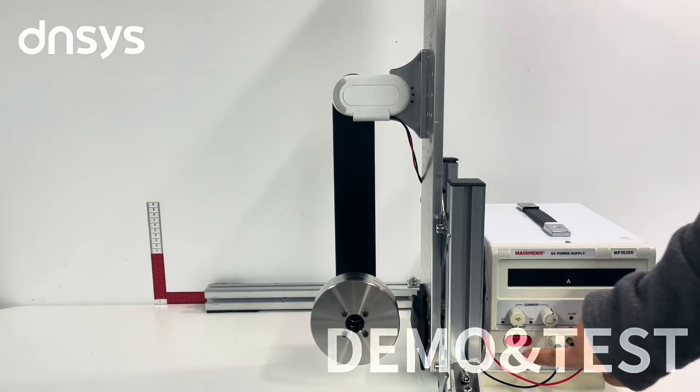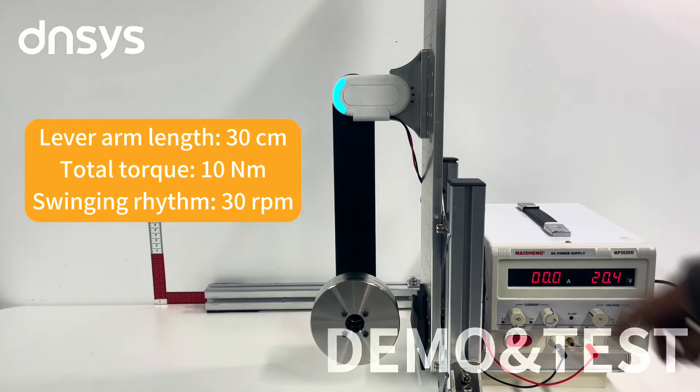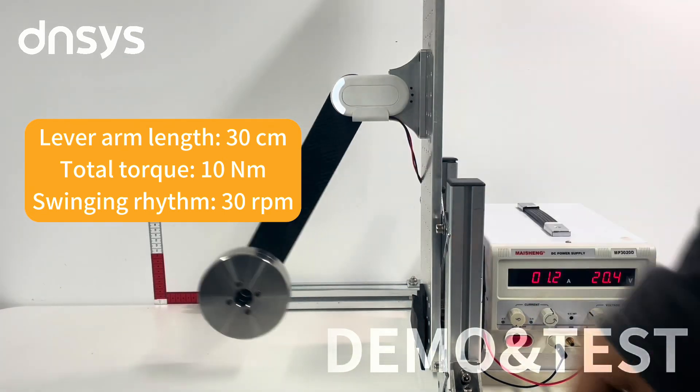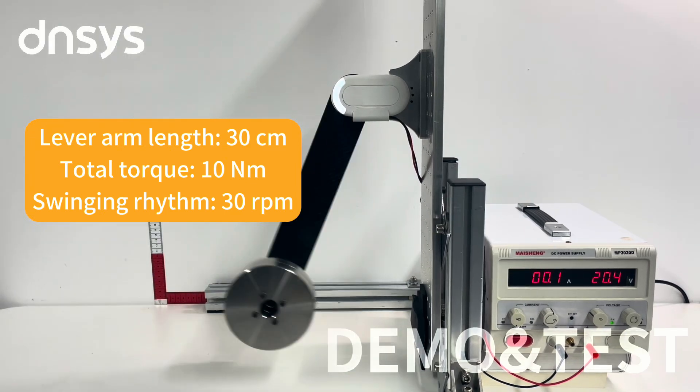We are currently running a performance test on the DNA1 motor. In this test, the motor's lever arm is 30cm long, generating a total torque of 10Nm, which is a swing rate of about 30rpm.